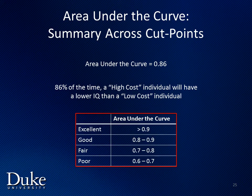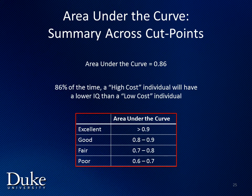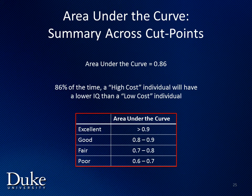The rule of thumb about interpreting area under the curve is that AUCs above 0.9 are considered excellent, AUCs between 0.8 and 0.9 are considered good, AUCs between 0.7 and 0.8 are considered fair, and AUCs between 0.6 and 0.7 are considered poor.